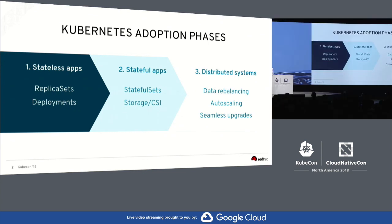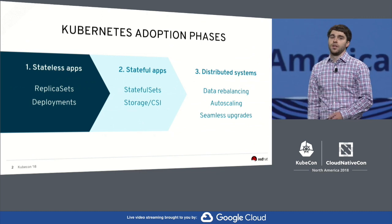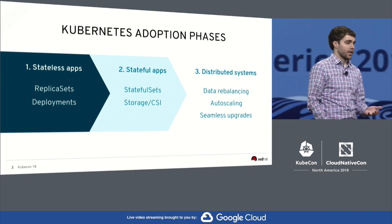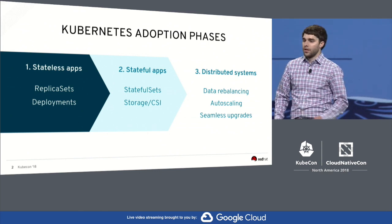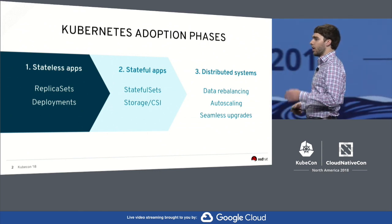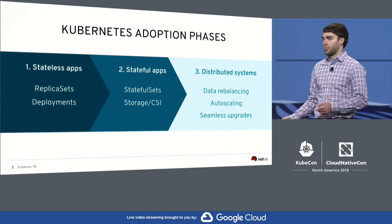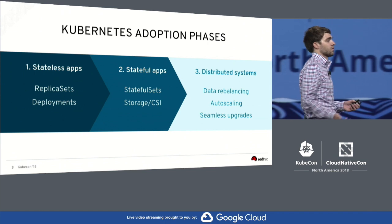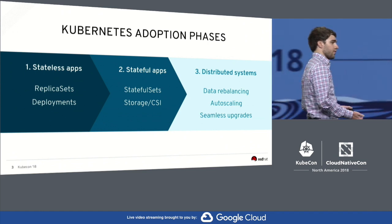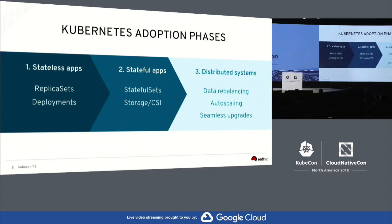When you look at these three rounds of growth, they're roughly mapped to when certain features came out in Kubernetes. The first round was stateless applications — many of you are running these today using replica sets and deployments to scale things out horizontally. The second phase is where we are today, with stateful applications, roughly mapped to when stateful sets were introduced. These were great for running workloads that needed stateful storage, using the container storage interface to mount storage from pod to pod as it moves from node to node.